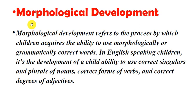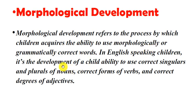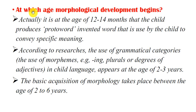What is morphological development? Morphological development refers to the process by which children acquire the ability to use morphologically or grammatically correct words. In English-speaking children, it is the development of a child's ability to use correct singulars and plurals of nouns, correct forms of verbs, and correct degrees of adjectives.